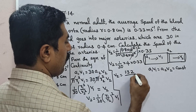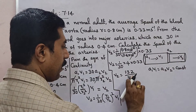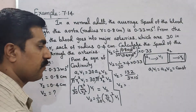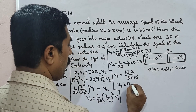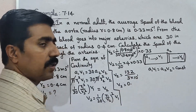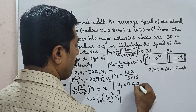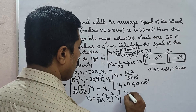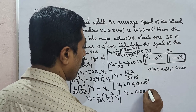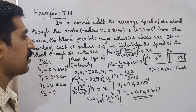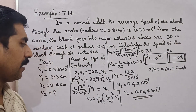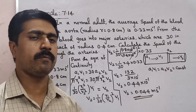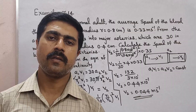So V2 is equal to 1 by 30 into 4 into 0.33, which gives V2 equal to 0.044 m/s. The speed of blood through each of the arteries is 0.044 metres per second. This is solved using the Equation of Continuity. Thank you.